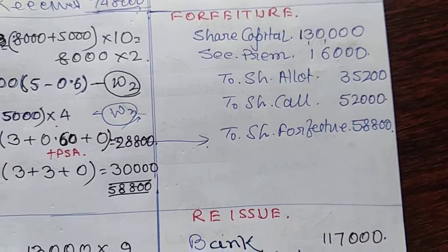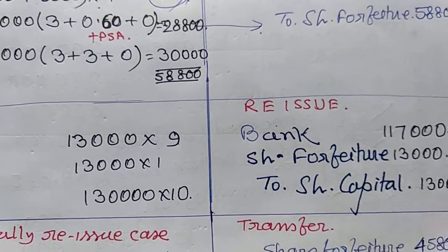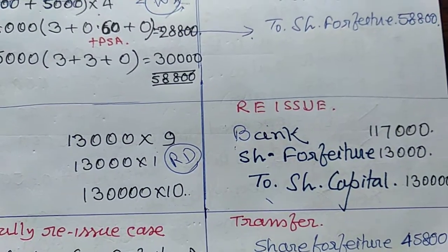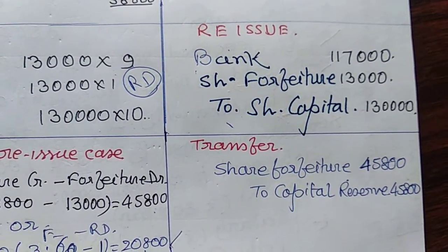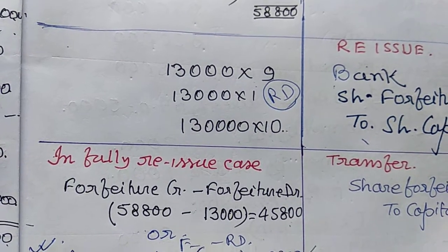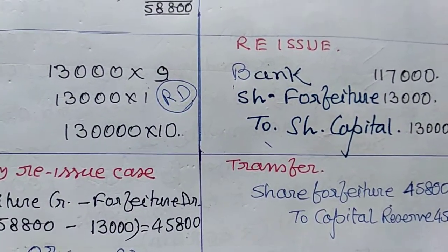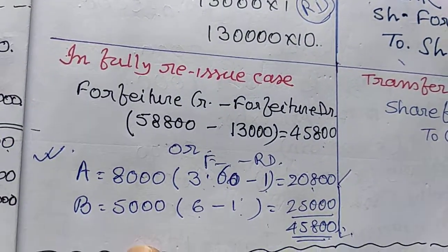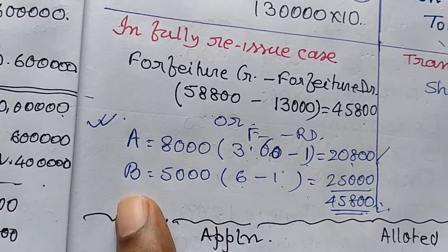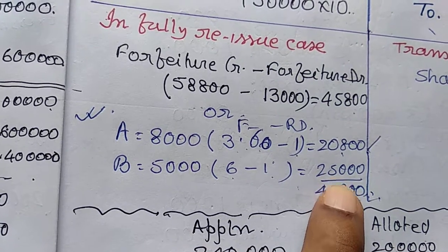Forfeiture is over. Next, reissue: 9,000 shares reissued at Rs. 9 each. The reissue discount is adjusted from the share forfeiture account. Then capital reserve transfer — share forfeiture to capital reserve. In case of full reissue you can simply take forfeiture amount minus reissue discount. Mr. A: 8,000 shares, Rs. 3.60 forfeiture minus Rs. 1 reissue discount. Mr. B: 5,000 shares, Rs. 6 forfeiture amount minus Rs. 1 reissue discount.